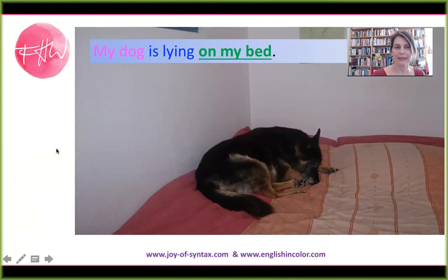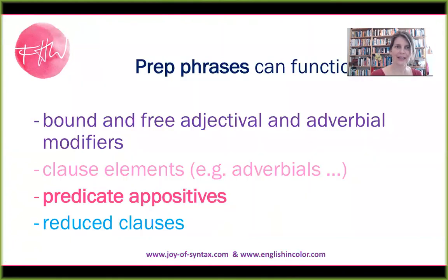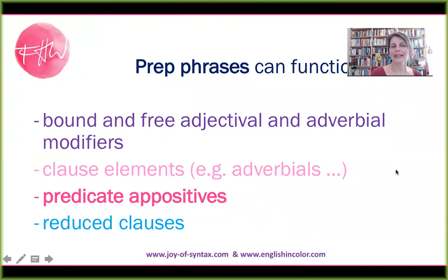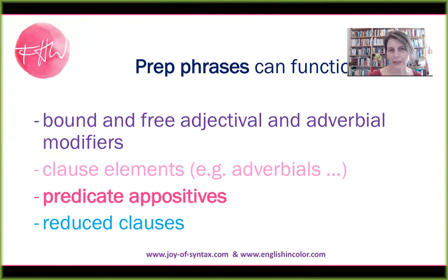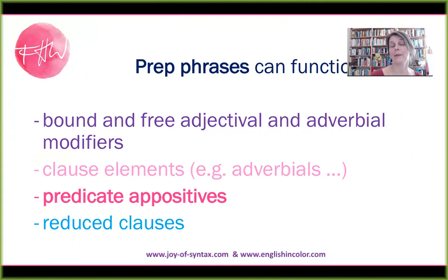So this is a very simple prep phrase as adverbial of place. Where is Rudolph? Where is he? He's lying on my bed. Let's look at functions that prep phrases can have. They can be bound and free modifiers. They can be clause elements, like in this previous example — 'on my bed' was a prep phrase as adverbial of place.